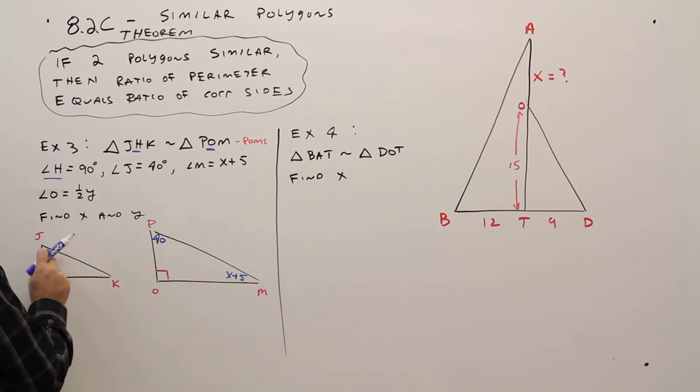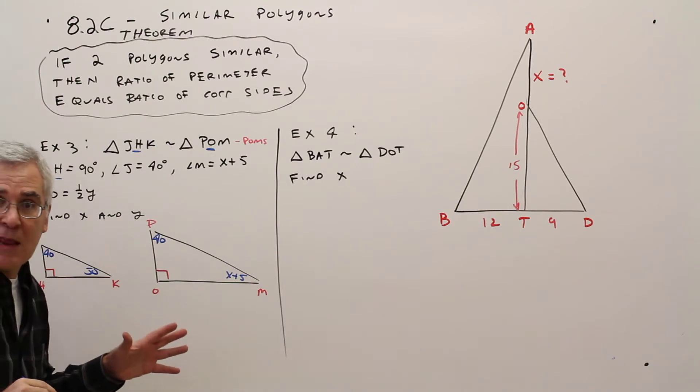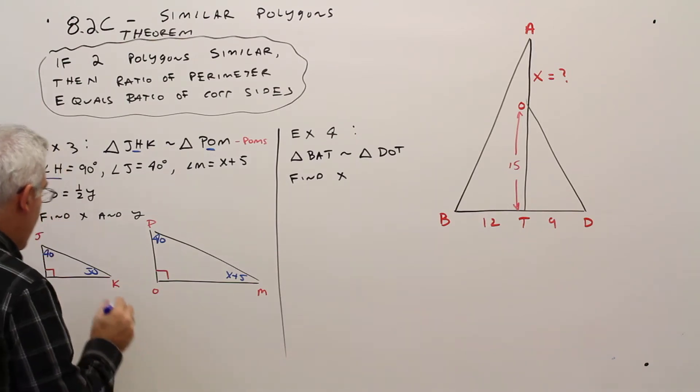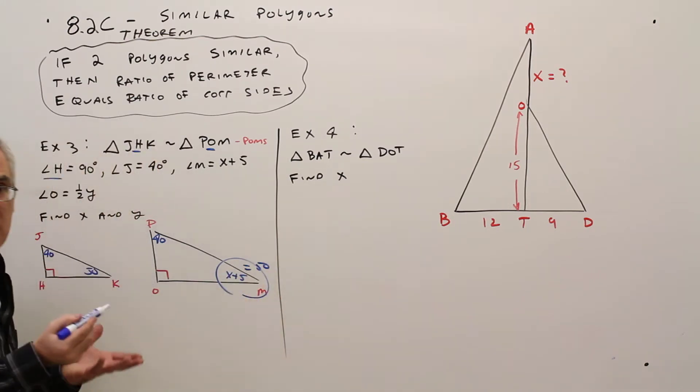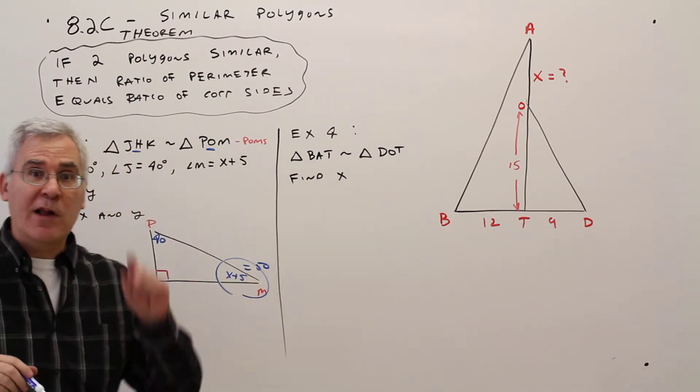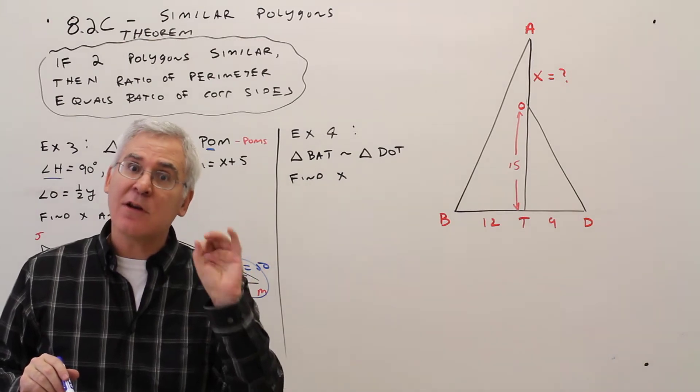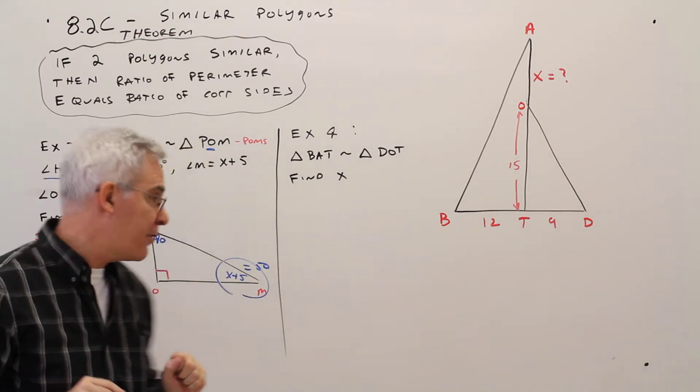Alright, so if this is 40, then this is 50, because the angles have to sum to 180. So if this is 50, then this is also 50. So we've got an equation right there. Step 1, set up the equation. Step 2, solve the equation. Step 3, answer the gosh darn question.